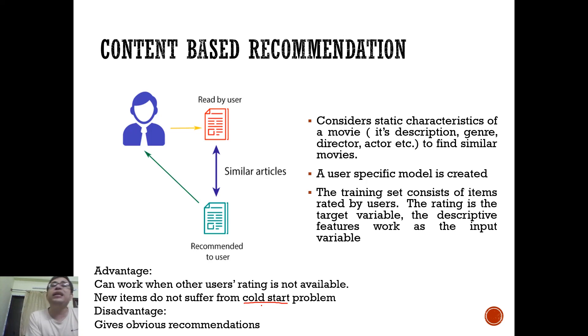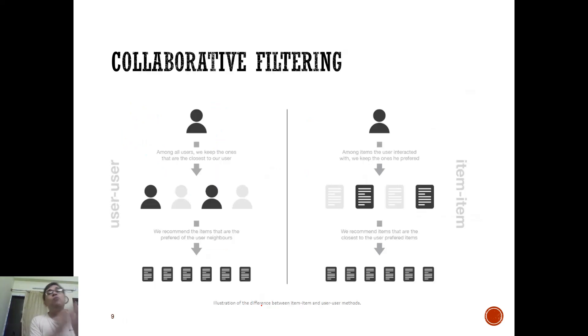And new items do not suffer from cold start problem. So this is one of the problems that if there is a new user, you don't know what to be recommended to him. Similarly, if there is a new item, you don't know which users this item should be recommended. So this is typically called as the cold start problem. And here, as you are using the item description instead of the rating, this doesn't suffer from this cold start problem. The disadvantage is that it gives obvious recommendations. So the novelty, the serendipity, surprise element that we were talking about will not be present when we are using a content-based recommendation system.